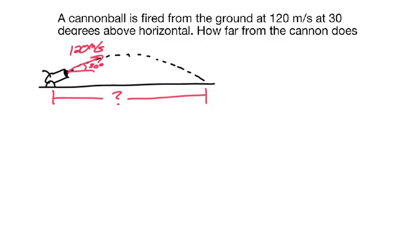Now, my diagram doesn't really show it this way, but it says in the problem that the cannonball is fired from the ground, and we know that it's going to land on the ground, though it looks like that part of my text has been cut off. How far from the cannon does the ball land? That's an important point to keep in mind as well.